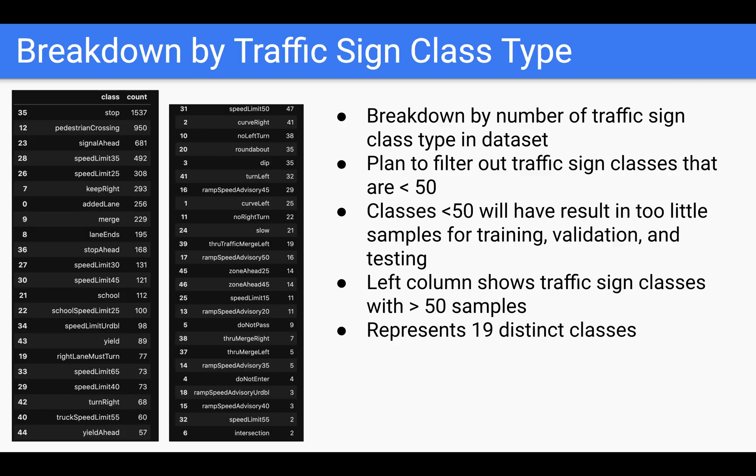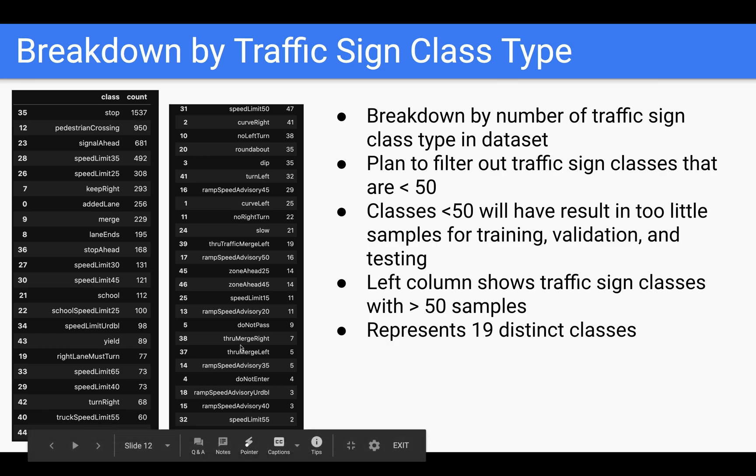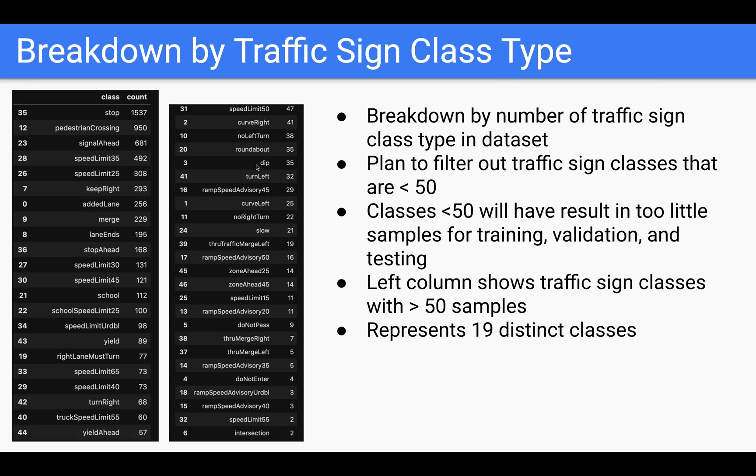This is a breakdown of the traffic sign class types within the LISA dataset. As you can see here, the stop sign has the most number of samples, whereas on the right-hand side here, these are samples that were less than 50. One of the strategies I used was I filtered out any samples where the number of classes was actually less than 50, because I felt that if it was less than 50, then this would result in too little samples for splitting into training, validation, and testing, and would basically hurt the overall performance of the model. In the end, by doing this filtering, this will represent 19 distinct target classes that the model will try to train on and detect.